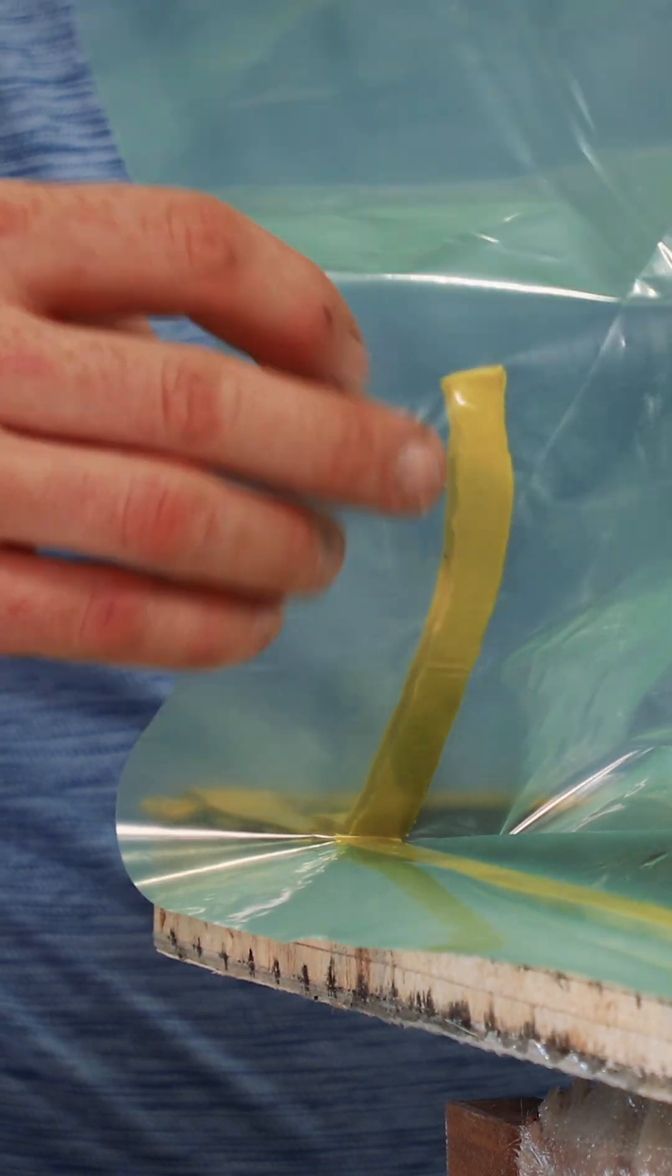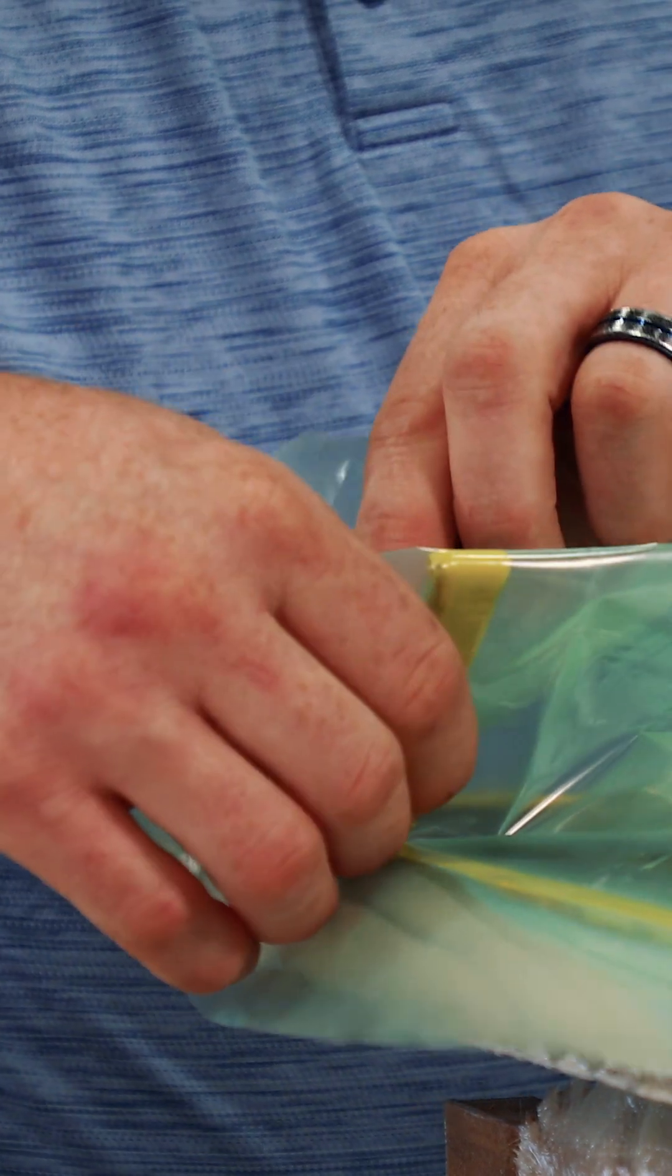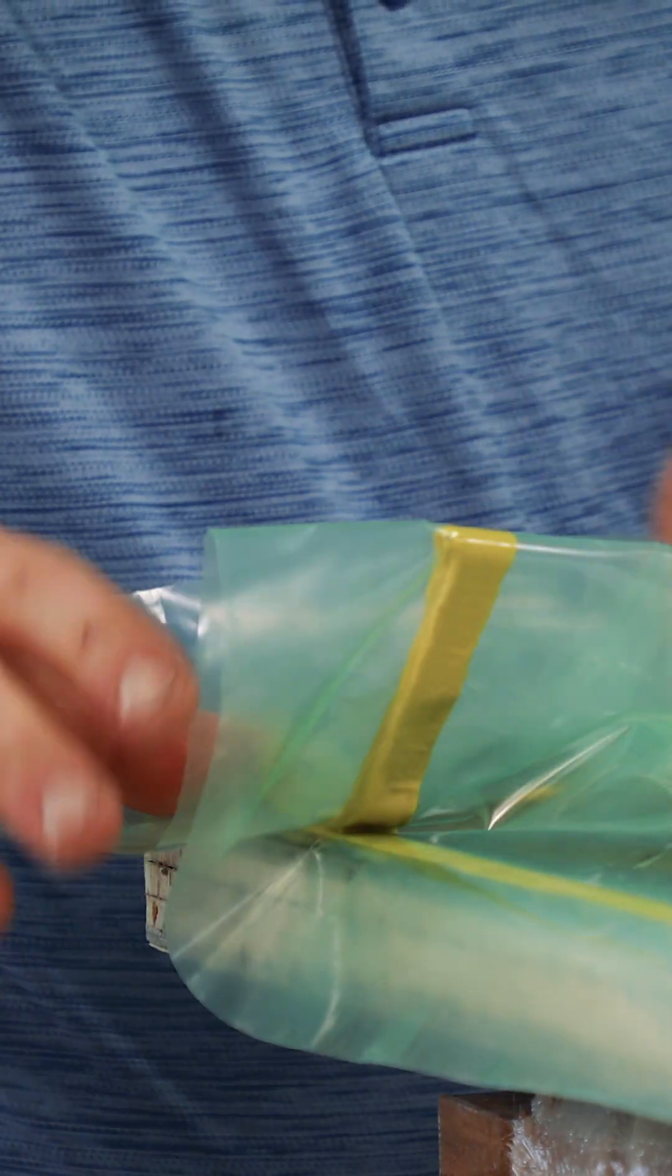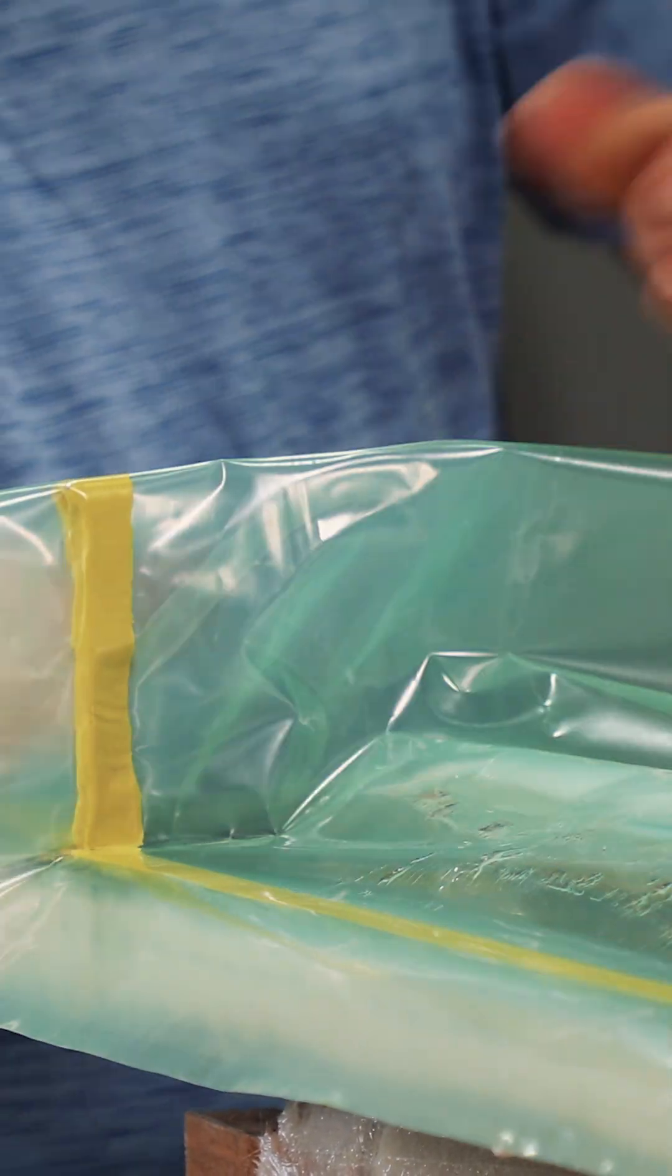When I pull the paper off, I just fold it over top of itself. Work it down with your thumb. And then from there we'll put another pleat about the same distance in the other direction.